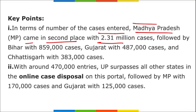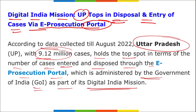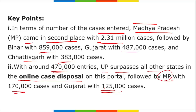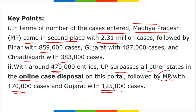Bihar came third with 859,000 cases, followed by Gujarat with 487,000 and Chhattisgarh with 383,000. For cases disposed online, UP leads with around 470,000 entries, followed by MP with 117,000 and Gujarat with 125,000. In summary, Uttar Pradesh tops both categories - most cases entered (9.12 million) and most cases disposed (4,70,000 entries) via the e-Prosecution portal.